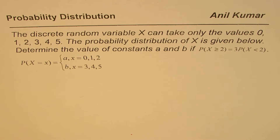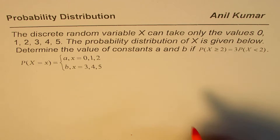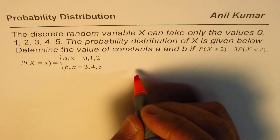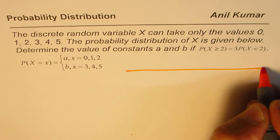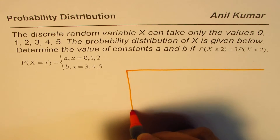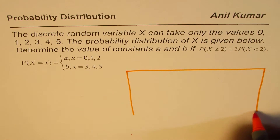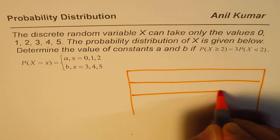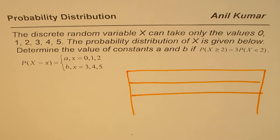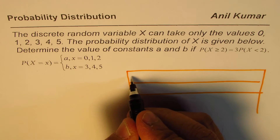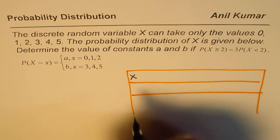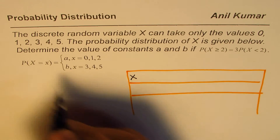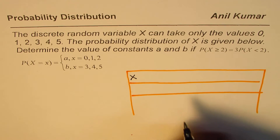You can pause the video, answer the question, and then look into my suggestions. Now in this question, let's write down the probability distribution. So what are we given here? We are given that the random variable is x, and we are given its probability in terms of A and B.